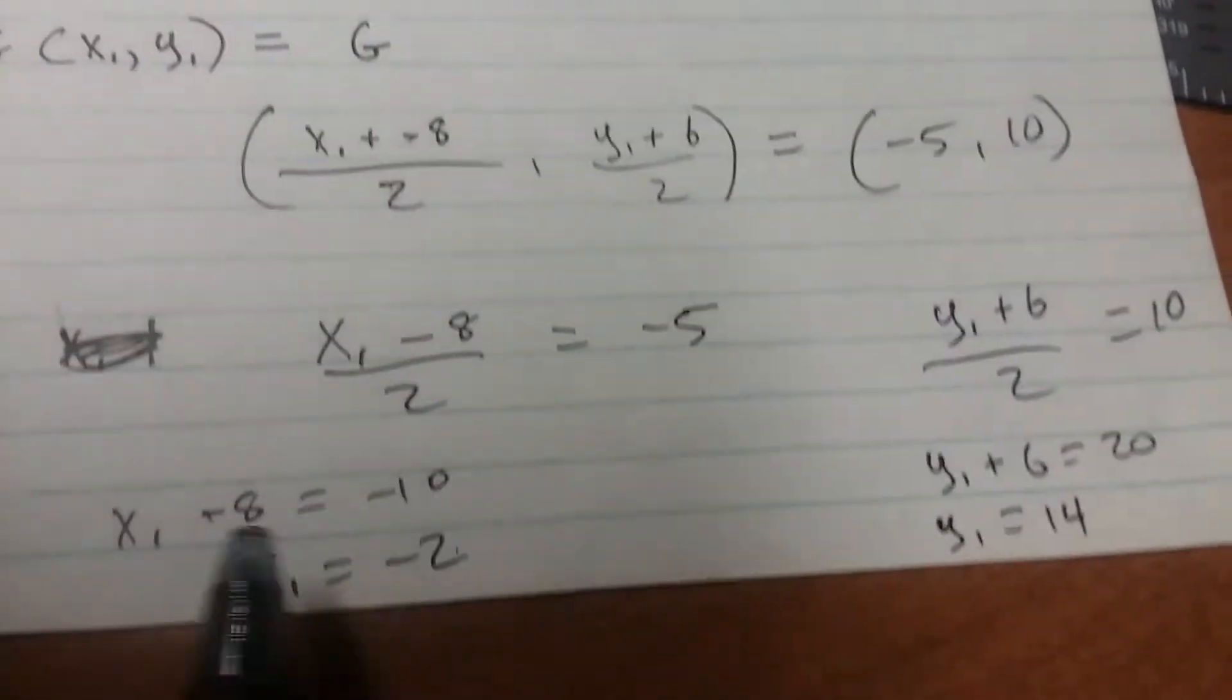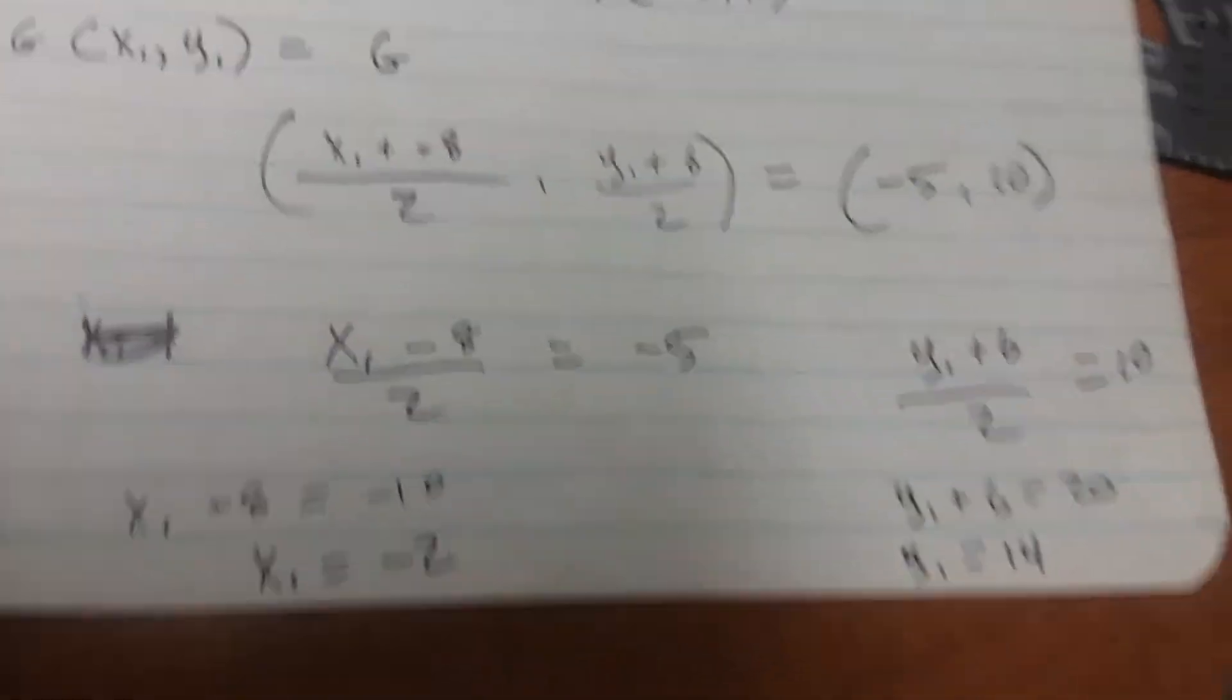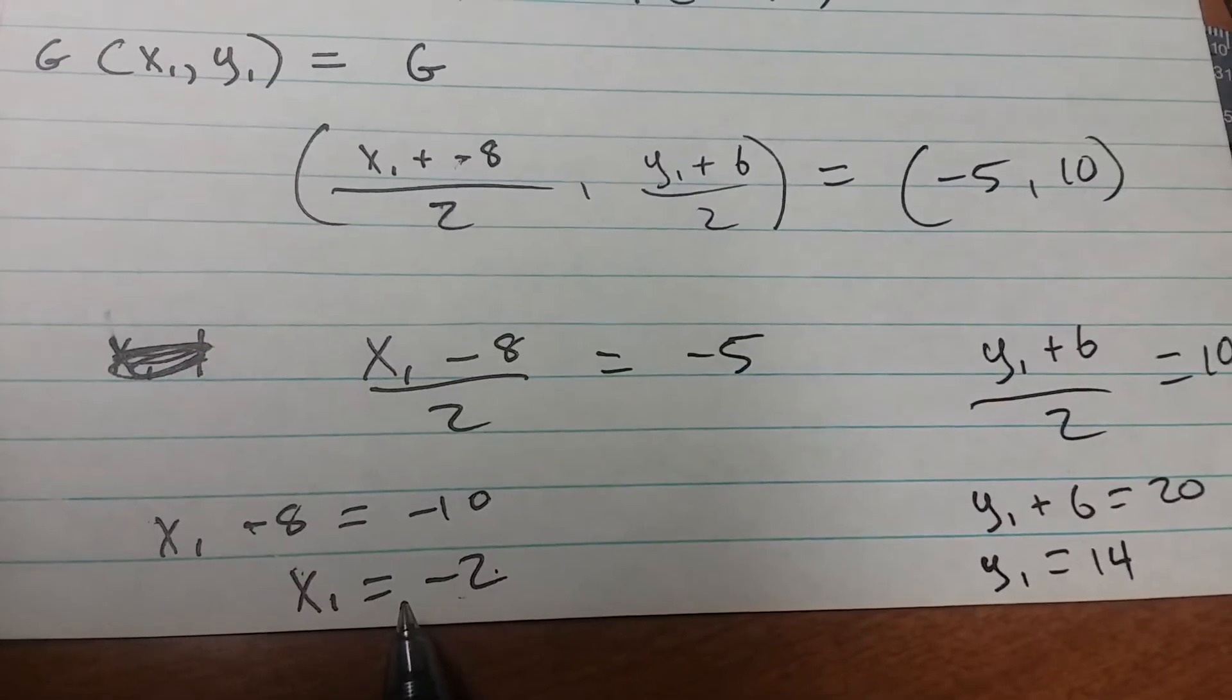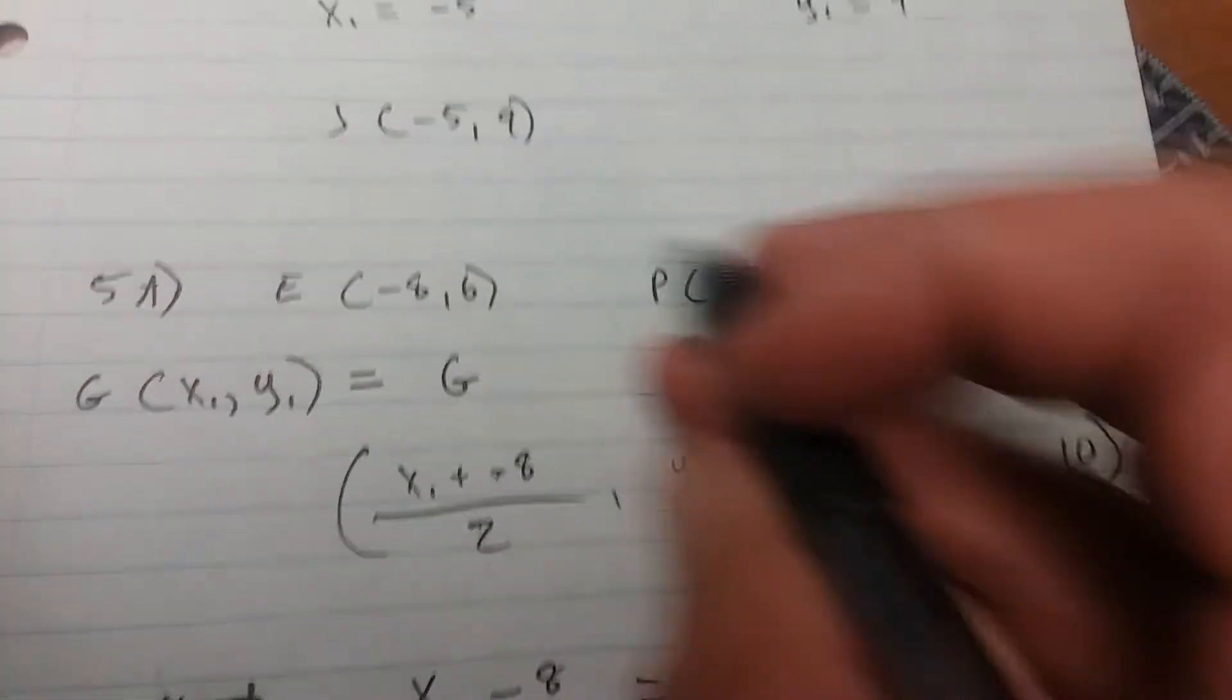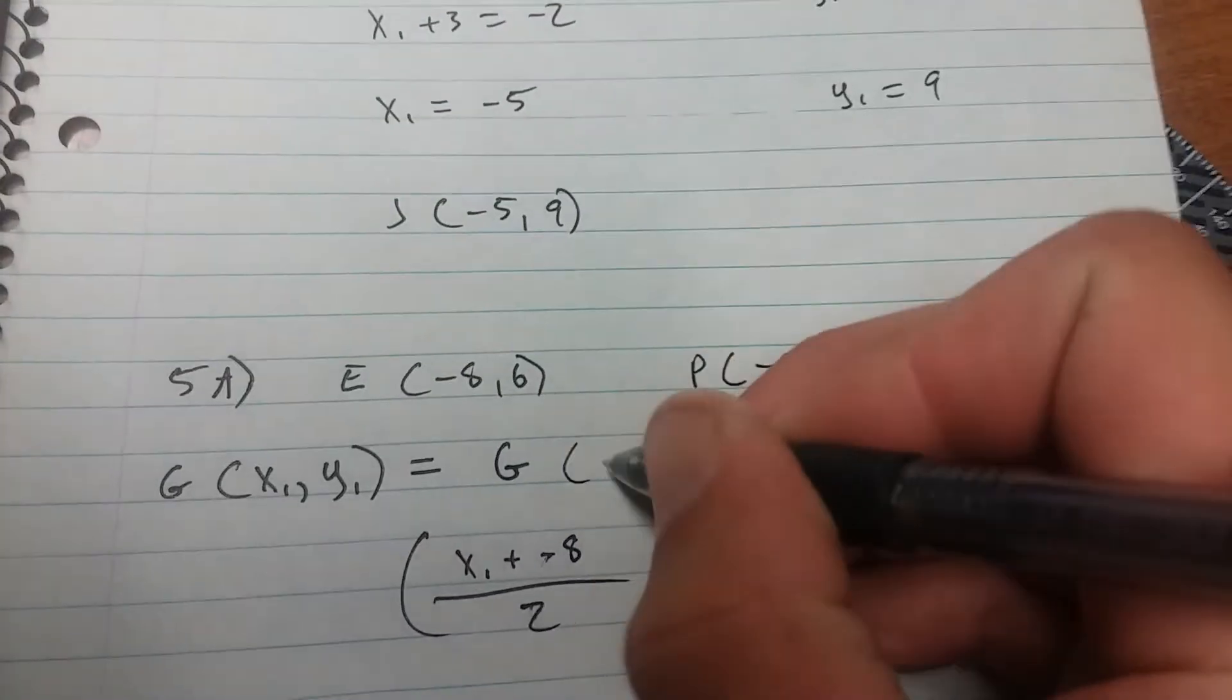Hey everyone, I must add butterfingers there, I dropped the phone while I was recording. Here we got to the end: x₁ is negative 2, y₁ is 14. Your final answer here, G is located at negative 2, 14.